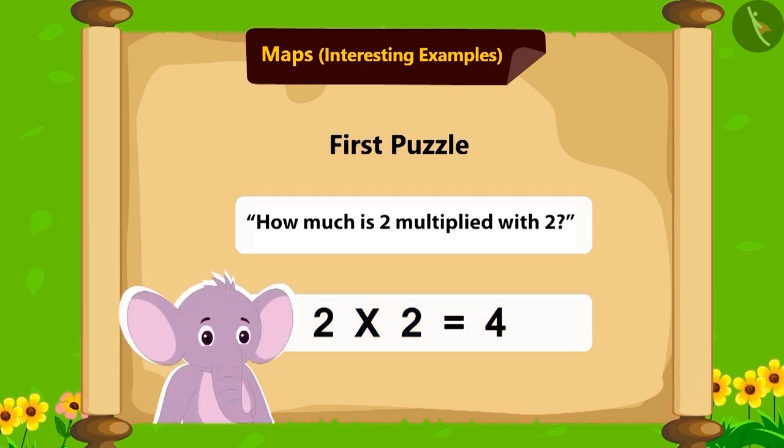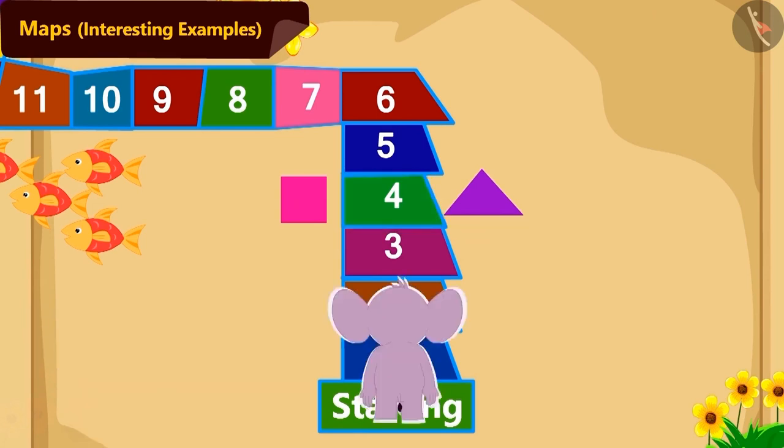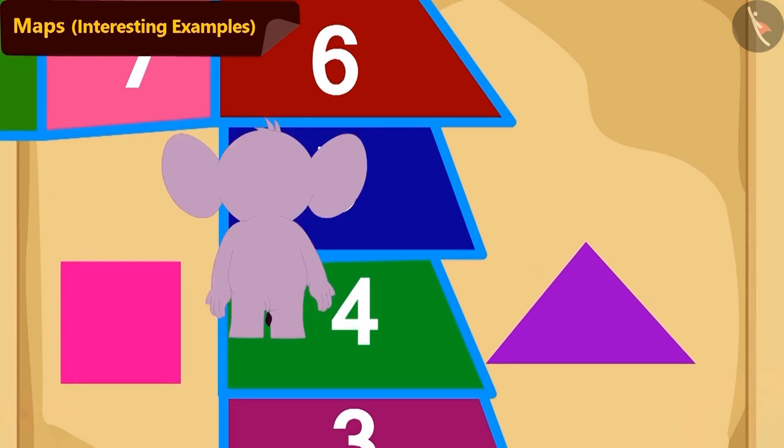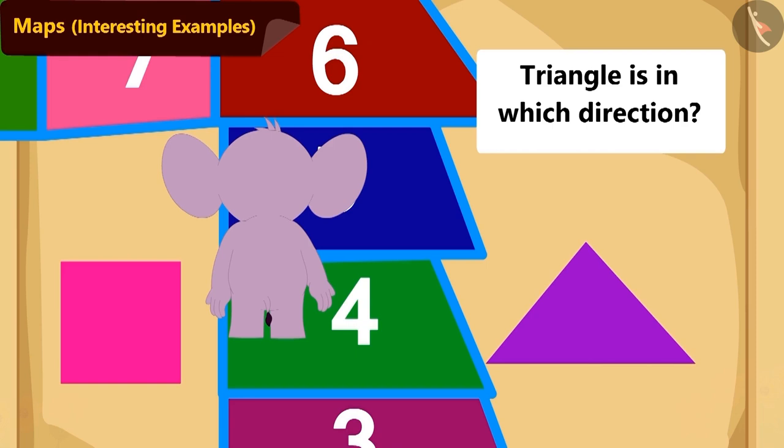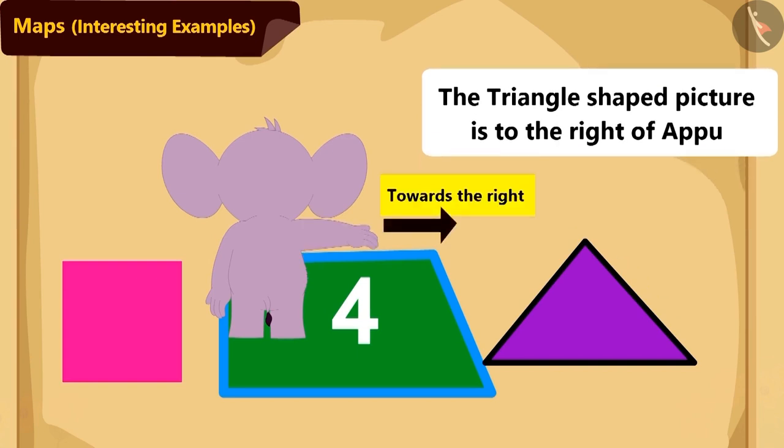Appu has also found the solution to this puzzle. Now, how will Appu reach tile number 4 from the start line? Children, by walking 4 steps straight, Appu has reached tile number 4. Children, can you tell whether the triangular-shaped picture is to Appu's right or is to his left? Absolutely correct! The triangular-shaped picture is at Appu's right side.